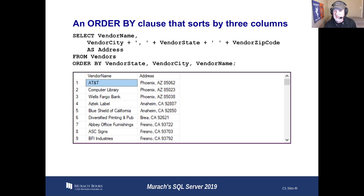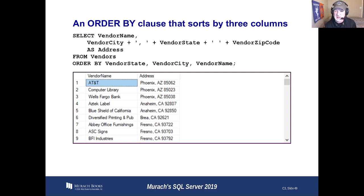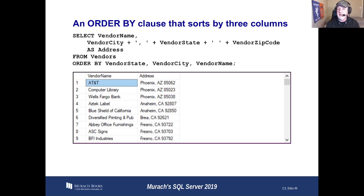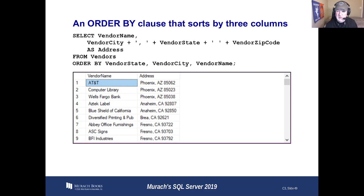One thing to note: vendor city, vendor state, vendor zip in the select are renamed with an AS of address. We can't use address in an order by. We can use the individual fields, but not the derived fields, not the AS fields. Select, from, where, order by are a block of code that fully executes before some other stuff we're going to start hanging on it. At the time that select from where order by completes, address exists as a single field containing, say, Phoenix, Arizona 85062. But the order by is a default part of the select phrase, so you can't use address until the order by completes. Just keep that little rule in mind.